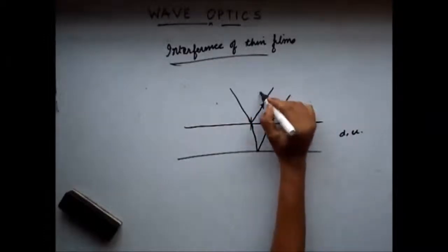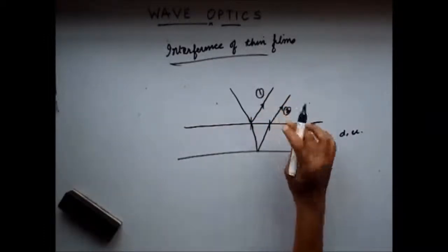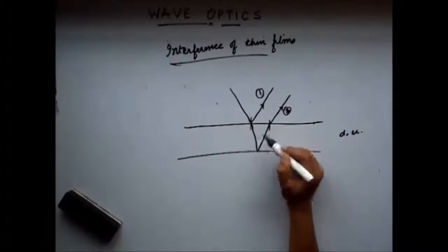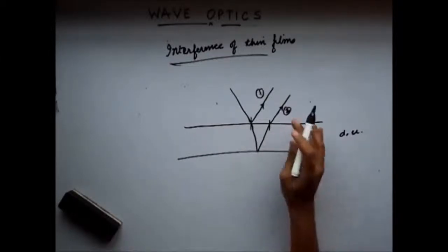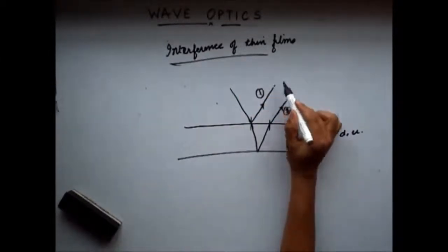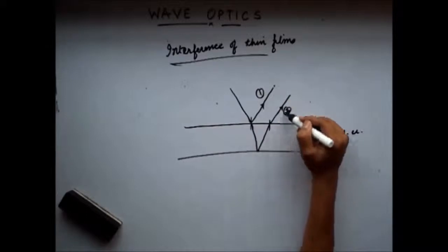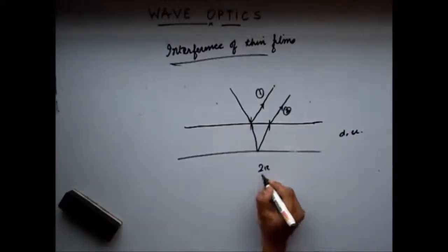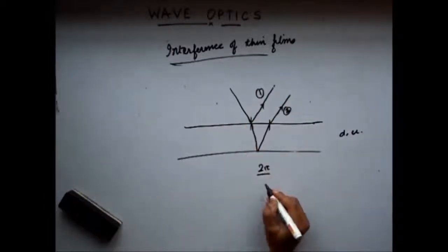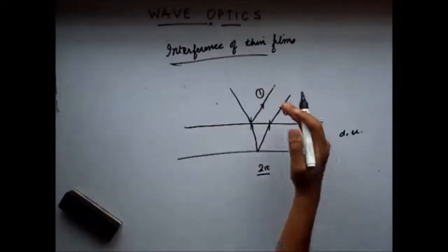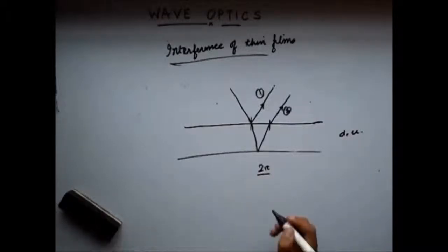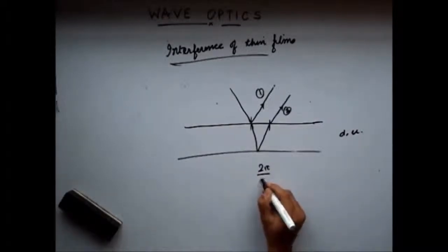We see that we have two light waves, and these two light waves serve as two sources for interference. This is my first source and this is coming from my second source. Since we have two sources, we will have an interference pattern. Let's study what are the conditions for constructive and destructive interference.